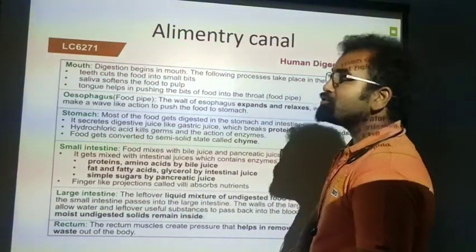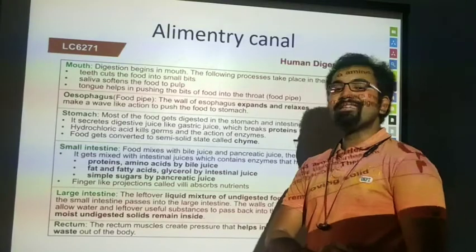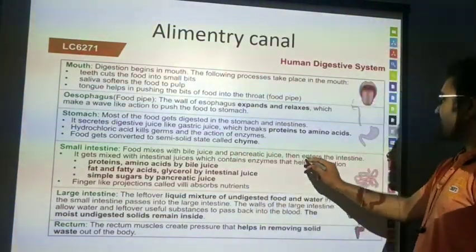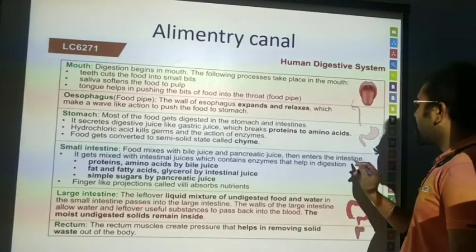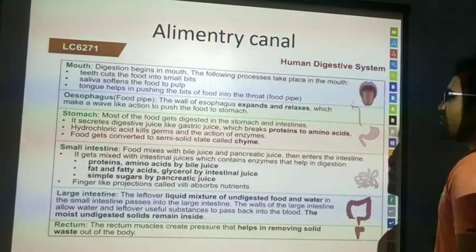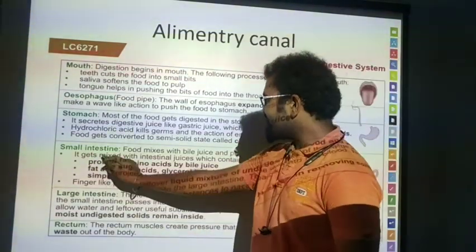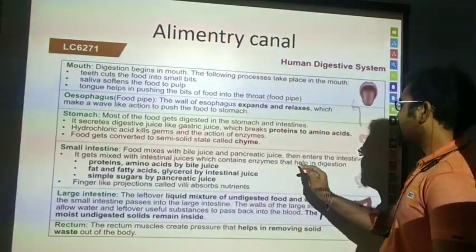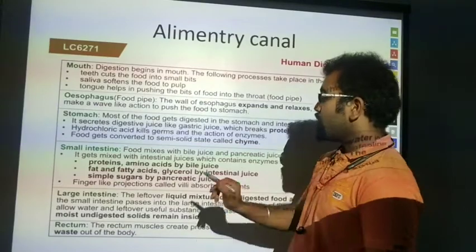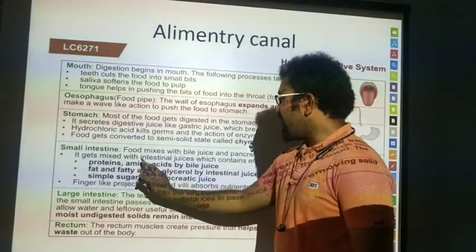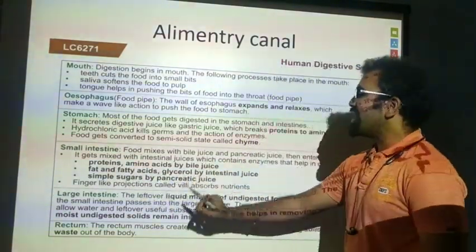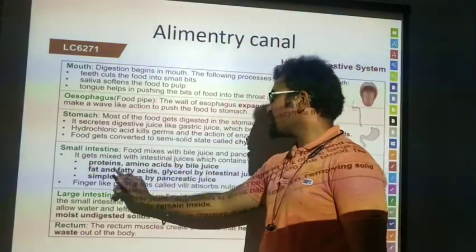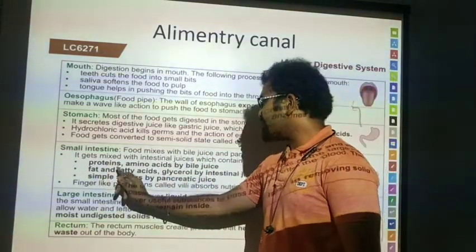Bile juice is secreted by the liver. Pancreatic juices then enter into the small intestine, where they get mixed with intestinal juices which contain enzymes. This aids in further digestion — proteins are broken into amino acids. Bile juice helps with fat components in the small intestine, breaking fat into fatty acids.